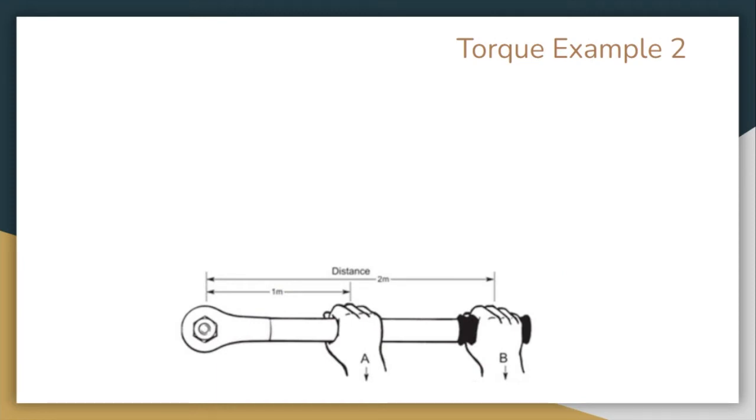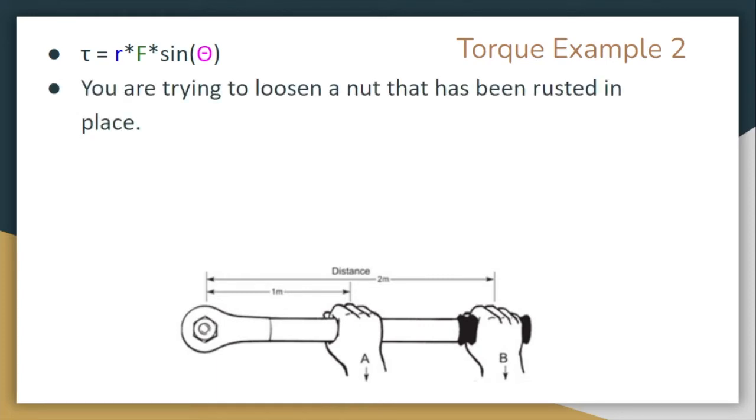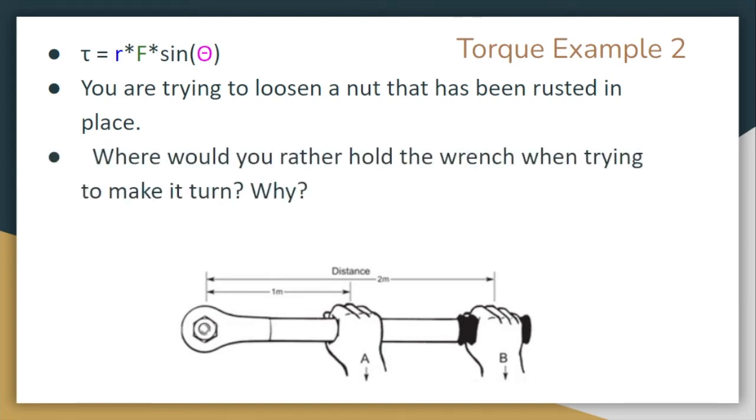Now we're going to take a look at a second example, and this one has to deal with a wrench because some of you might be mechanics in the future or maybe handy people that are going to use tools. Let's say that you're trying to loosen up a nut that has been rusted in place. Where would you rather hold the wrench when trying to make it turn? This is very similar to our door example. So we have a person holding at point A and a person holding at point B. Point A is one meter and point B is twice the distance at two meters away from that pivot point.